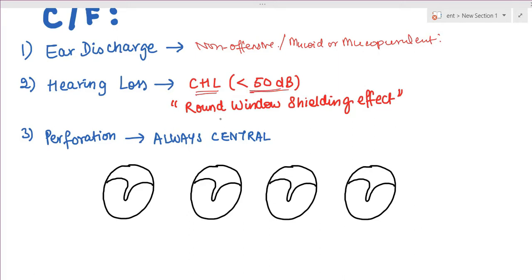There is a phenomenon known as round window shielding effect, seen when there is active suppuration with ear discharge and the patient hears better. When the ear is dry with perforation, sound strikes both the oval window and the round window.